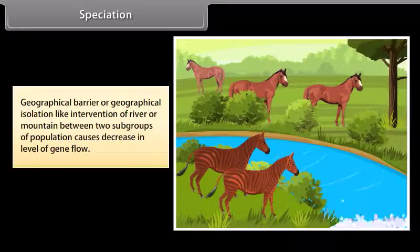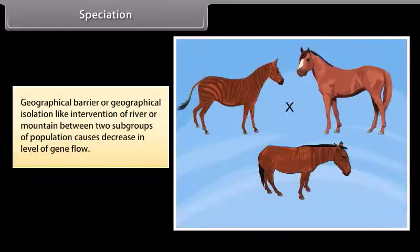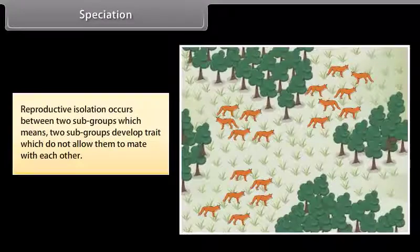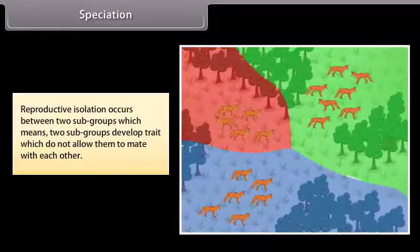Geographical barrier or geographical isolation like intervention of river or mountain between two subgroups of population causes decrease in level of gene flow. Reproductive isolation occurs between two subgroups which means two subgroups develop traits which do not allow them to mate with each other.